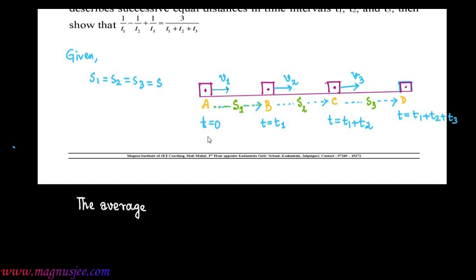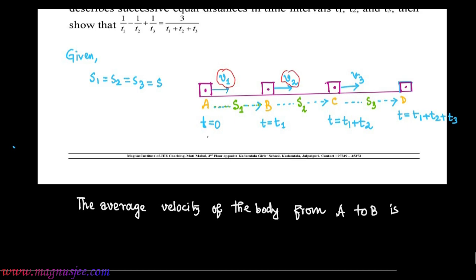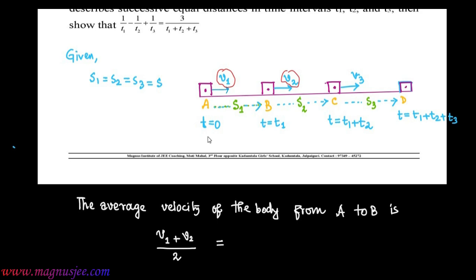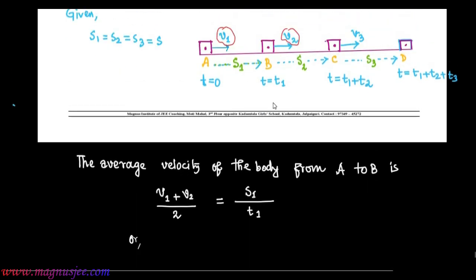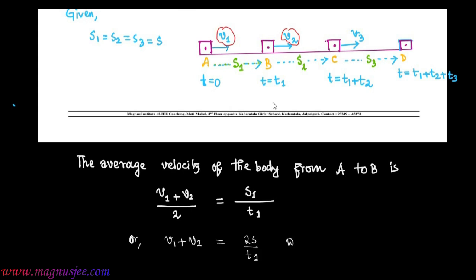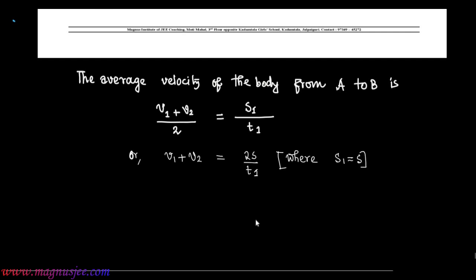The average velocity of the body from point A to B is given by (V1 + V2) / 2 = S1 / T1. Since S1 = S, we get V1 + V2 = 2S / T1. This is Equation 1.